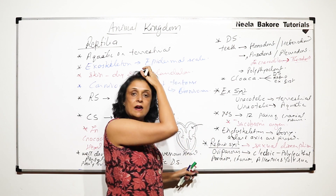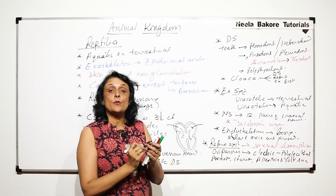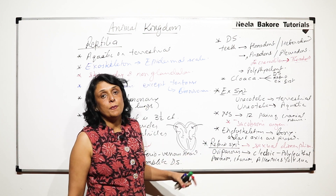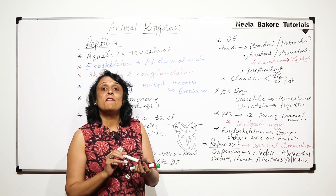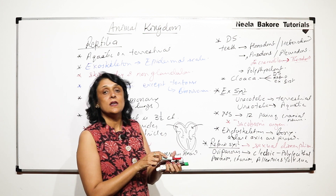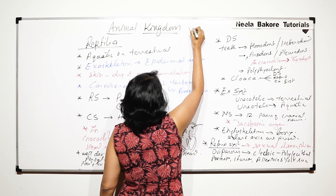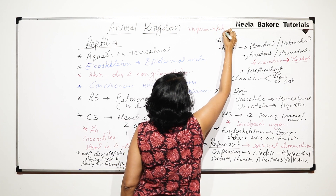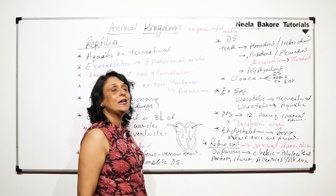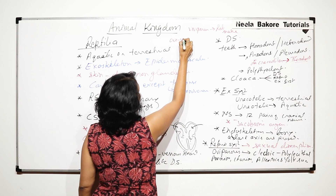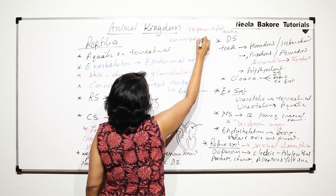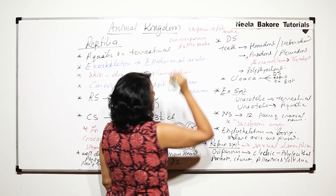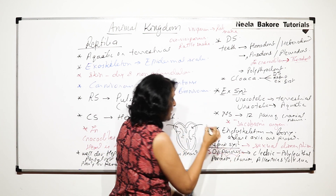All extra-embryonic membranes are present, and that is why this group is called Amniota. Most reptiles are oviparous, but some are viviparous or ovoviviparous. The viviparous example is the rat snake, and the ovoviviparous example is the rattle snake, but most of them are oviparous.